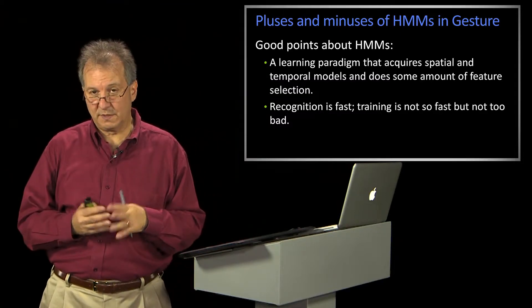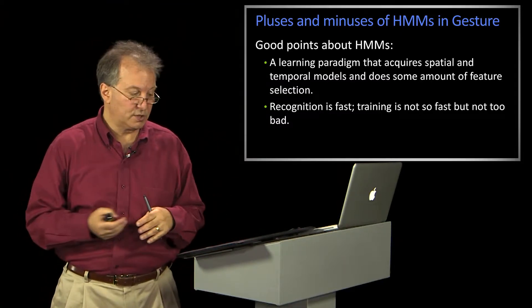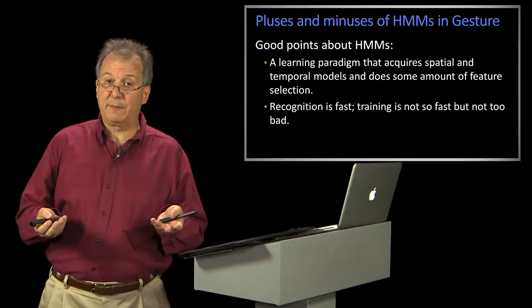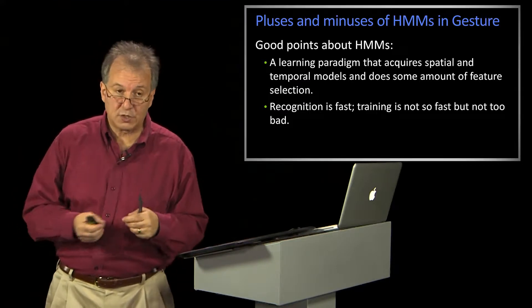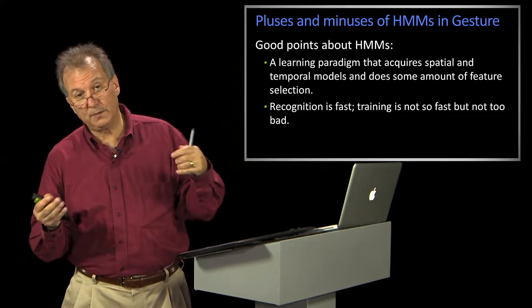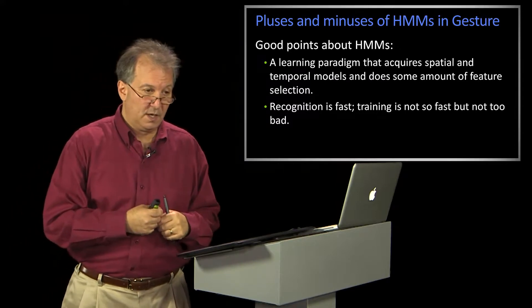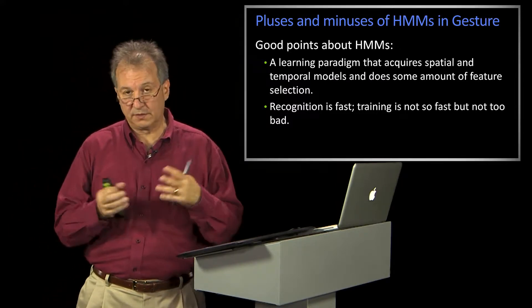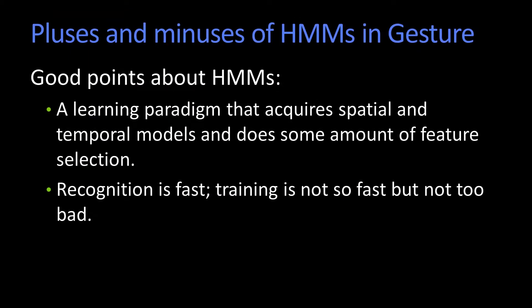That's all we're going to talk about in terms of HMMs and gesture. The good things about it were that it was a learning paradigm. You define some features — you have to define the right features — and you collect some well-annotated data, which also takes some work. But given that, you're able to train your HMMs by just giving it the data. So it's a learning paradigm, and that's good.